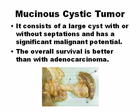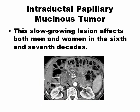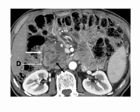Mucinous cystic tumor has a better prognosis than adenocarcinoma. Pancreatic mucinous cystic tumors are large cysts with or without septation and have significant malignant potential, but the prognosis is better than pancreatic adenocarcinoma. Intraductal papillary mucinous tumor is the last of the exocrine pancreas tumors. It is a slow-growing lesion common in the 6th and 7th decades of life. You can see here a big structure in the pancreas on a CT scan.